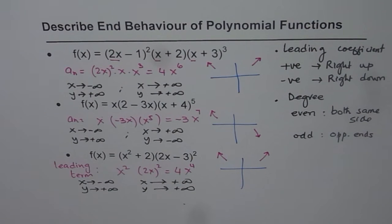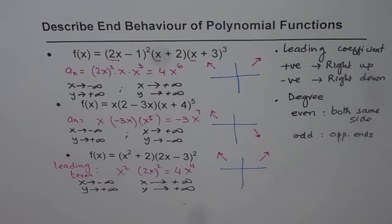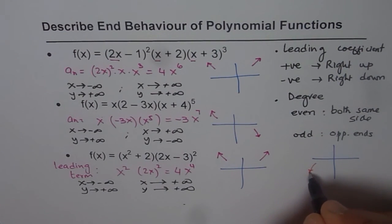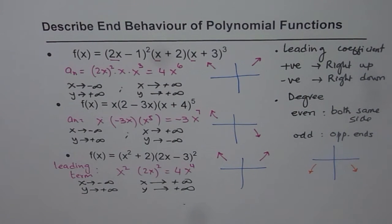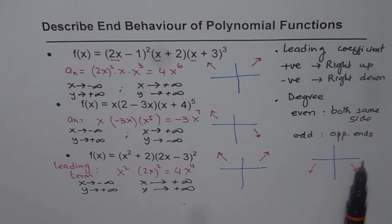So that is how, by analyzing the leading term — which gives you both the leading coefficient and the degree of the polynomial — we can determine the end behavior. As an exercise, give an example of a polynomial where as x approaches negative infinity y approaches negative infinity, and as x approaches positive infinity y approaches positive infinity. Thank you and all the best.